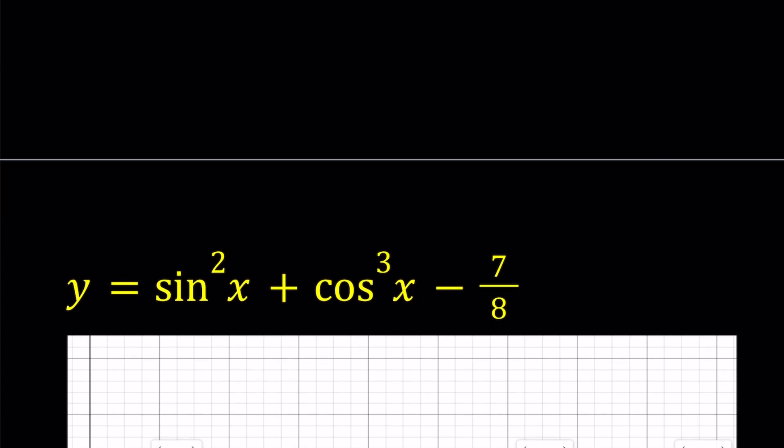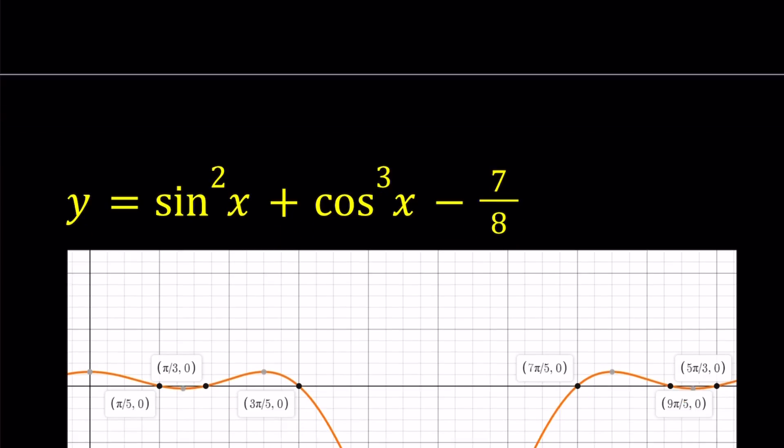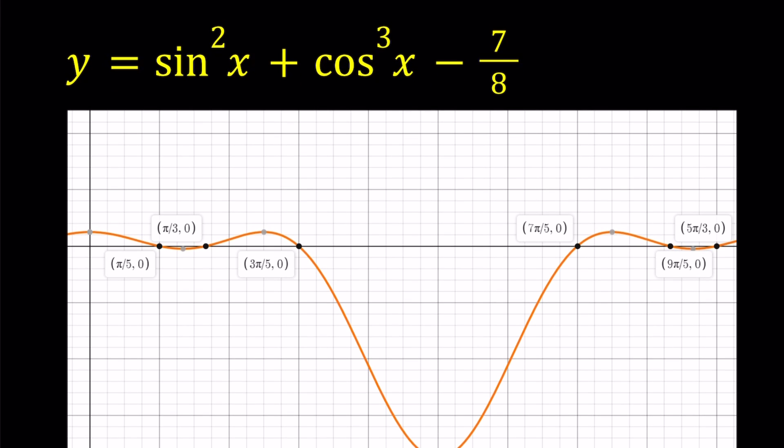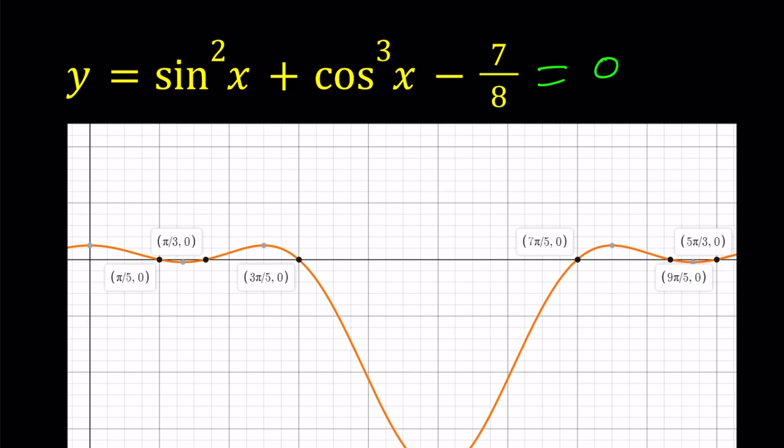And let's go ahead and take a look at the graph. And we're going to finalize with that. For this problem, I graphed y equals sine squared x plus cosine cubed x minus 7 eighths because I wanted to look at the x-intercepts. If you set this equal to 0, basically, you find the solutions to our original problem. And those roots are basically right there, placed on the graph nicely. And this is an interesting graph because it kind of behaves differently on different intervals. And I'm just showing you from 0 to 2 pi.